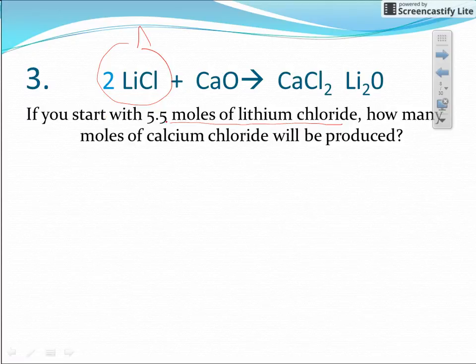So in number three, it says if you start with 5.5 moles of lithium chloride, so this is substance A, how many moles of calcium chloride will be produced? So this is who we're trying to go to, and that's going to be who we're calling substance B.